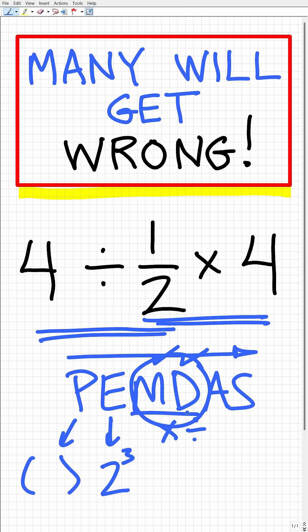Well, the way this works in the order of operations is the following. So you're going to do any multiplication or division that you have, whatever you see first from left to right.